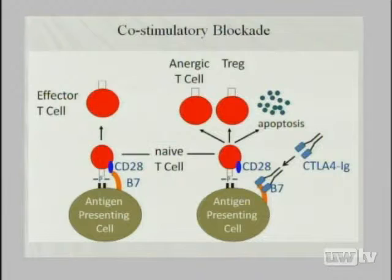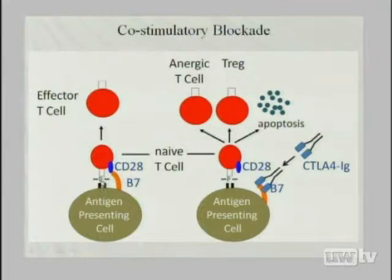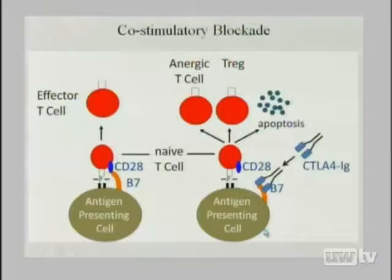Let me digress to some observations we've made with initial attempts at an interventional therapy: CTLA-4 Ig, a co-stimulatory blockade drug now used in humans for several indications. For a T cell, recognizing a peptide-MHC complex — signal one — is not enough; it also needs co-stimulation, canonically the B7-CD28 axis. In the absence of co-stimulation, you don't get an effector cell — you get a tolerogenic pathway: anergy, T-reg induction, or apoptosis.